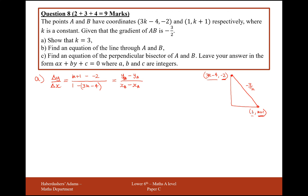These are the A coordinates and these are the B coordinates. So I've done coordinate B minus coordinate A on the y-axis, and coordinate B minus coordinate A on the x-axis. Simplifying this — we'll set it equal to minus 3 over 2 in a bit — that gives us (k+3) over (5 minus 3k), and this equals minus 3 over 2.